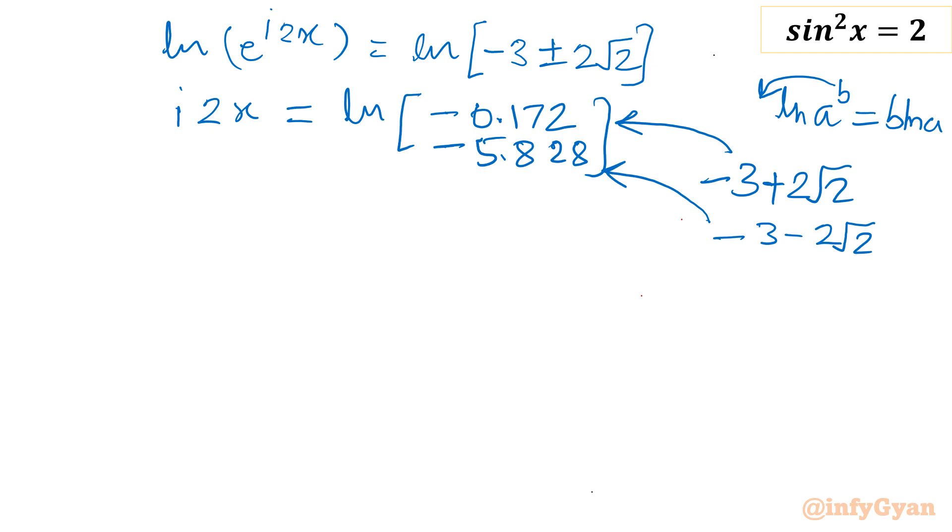Now I will write x is equal to 1 over 2i ln. Let me consider only one, the first one, 0.172. And the second would be x is equal to 1 over 2i ln negative 5.828.